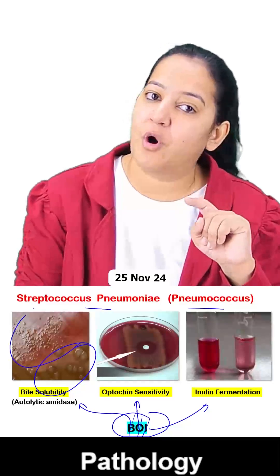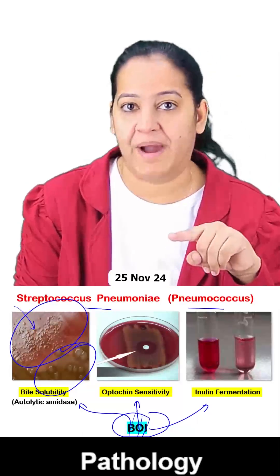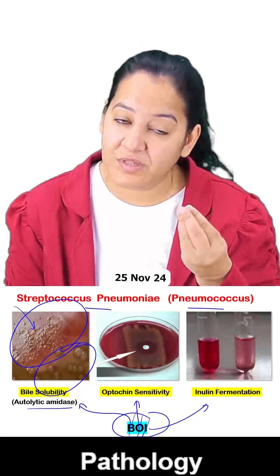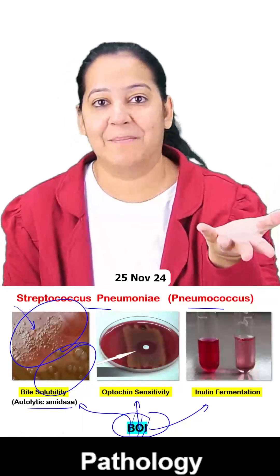You can see here are the colonies, but here colonies disappear if you put few drops of the bile. Because bile activates an enzyme autolytic amidase which is causing the dissolution of these colonies in the bile. It's a unique property.